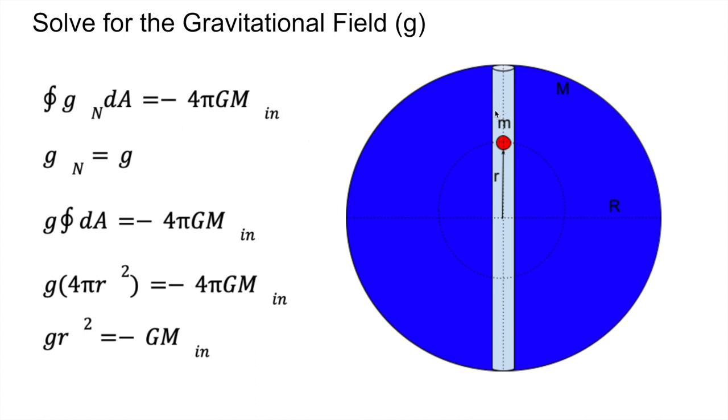And so if we use the surface of the Gaussian sphere that we have, we know that the dA at this point will be upwards. And the gravitational field, well, it will be, due to symmetry, it will be radially inwards. And so that is basically how we get the fact that Gn is equal to G because it is in the direction of the dA completely.